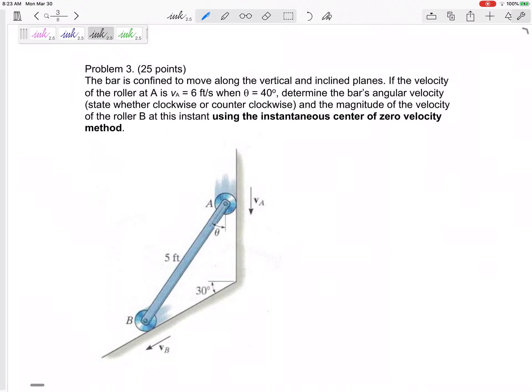Alright, problem number three, an instantaneous center problem. This bar is confined to move along the vertical and incline planes. The velocity of the roller at A is 6 feet per second when theta equals 40 degrees, so this angle right here is 40 degrees.